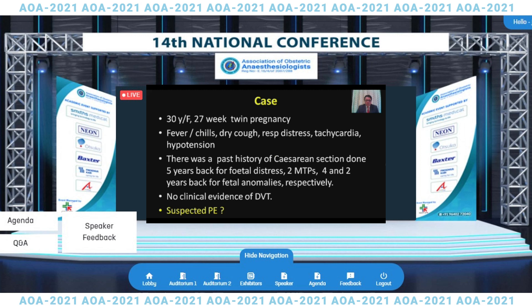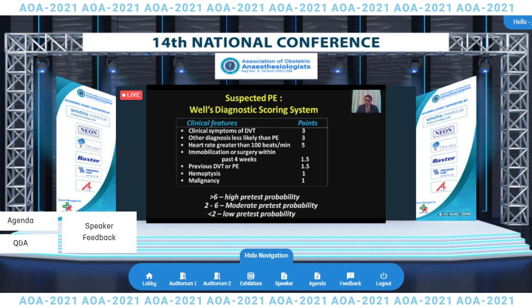We'll go through a case: a twin pregnancy, patient aged 30 years at 27 weeks gestation. She presented with fever with chills, dry cough, respiratory distress, tachycardia, and hypertension. Past history included a cesarean section five years back for fetal distress and two medical terminations of pregnancy four and two years back for fetal anomalies. There was no clinical evidence of DVT, so pulmonary embolism was suspected.